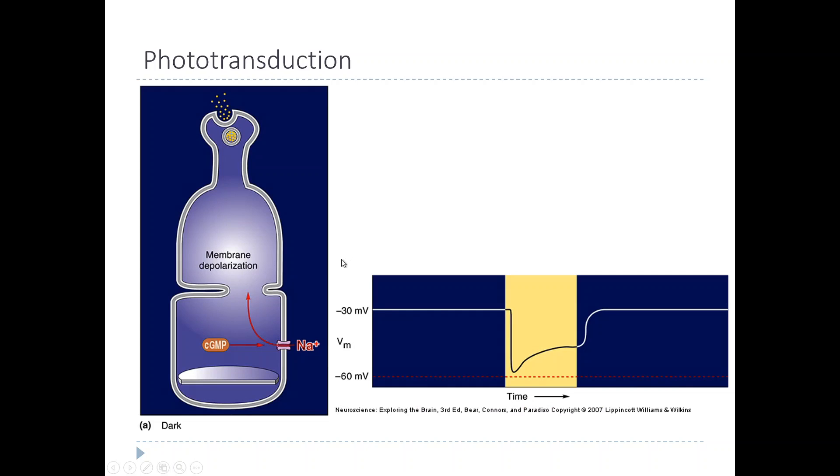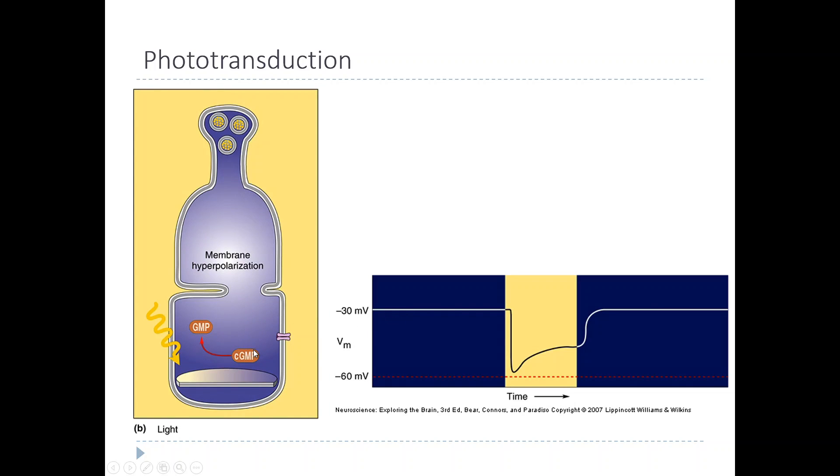So what that means is in the dark, there is this large sodium current coming into the cell through these cyclic GMP gated ion channels. In the dark, the membrane potential of a photoreceptor is actually less negative than in the light. In effect, these cells are depolarized in the dark. Then in the light, the cyclic GMP concentration goes down, sodium channels close, and that means there's less positive current coming into the cell. So the cell becomes more negative, which means the cell actually becomes hyperpolarized in the light.